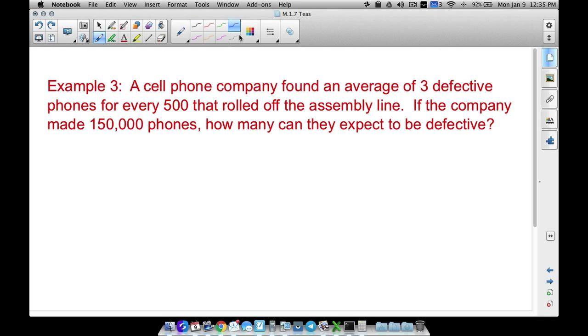A cell phone company found an average of three defects, so three defects per 500 phones that rolled off the assembly line. So for every 500 phones that rolled off this assembly line, the cell phone company found that on average, three out of those 500 are jacked up. They're defective. So if the company made 150,000 phones, 150,000 phones is going to go at the bottom. That's how many that were made. How many will be defective? We don't know.